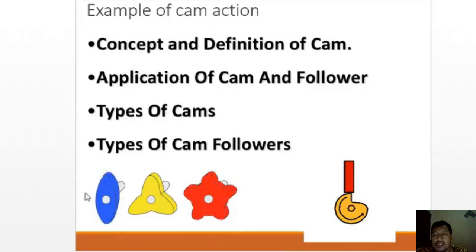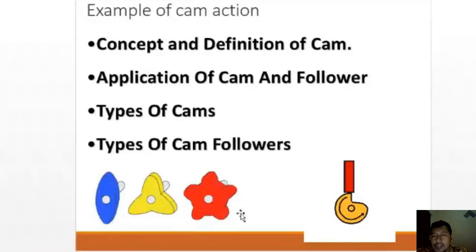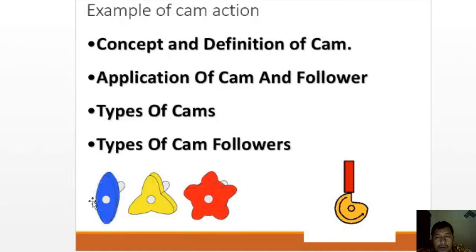Here are various examples of cam shapes — some are circular, some are half-circular, some are star-shaped, depending on the desired motion.